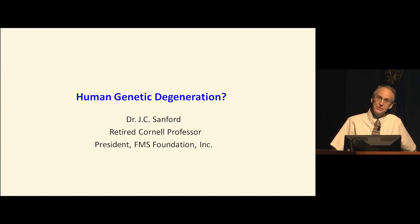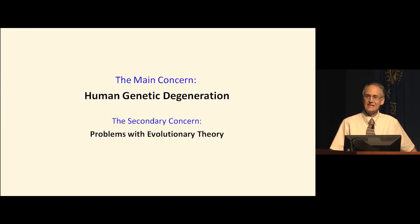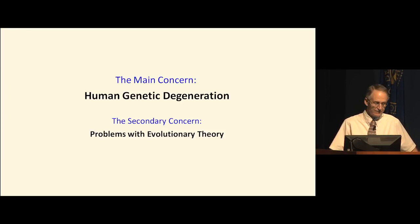The title is Human Genetic Degeneration. It's not really a question mark because most people in the field of population genetics know that the human race now has a growing genetic load because of the accumulation of deleterious mutations. I'd like to distinguish the main concern and the secondary concern. I originally got involved in this research because I was interested in the question: what can mutation plus selection do? That involved evolutionary theory and problems with evolutionary theory. But as I've gotten deeper into the topic, more and more I've realized genetic degeneration is a very serious concern for the human race.